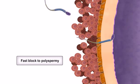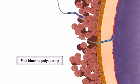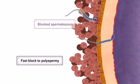During fast block to polyspermy, after fusion, the oocyte membrane depolarizes, preventing other spermatozoa from fusing with it.